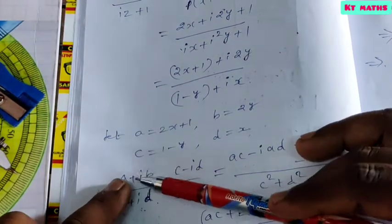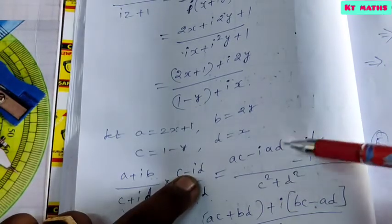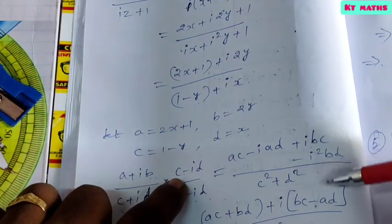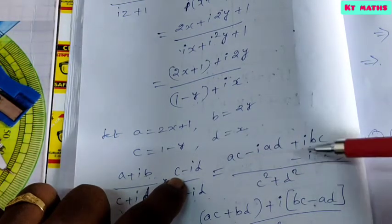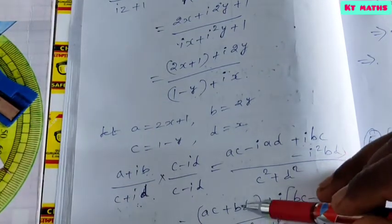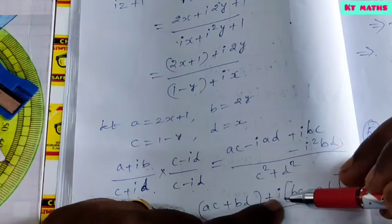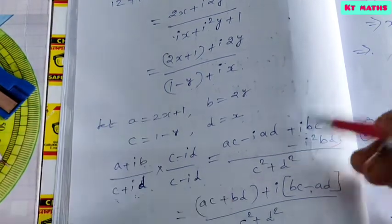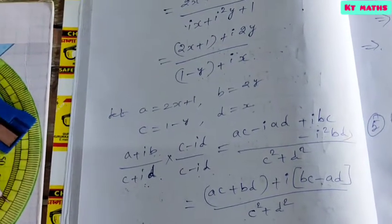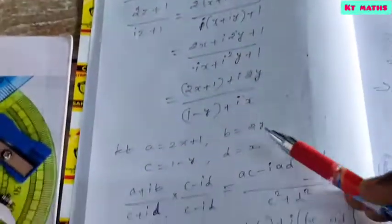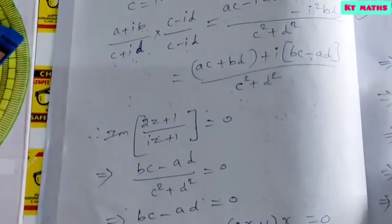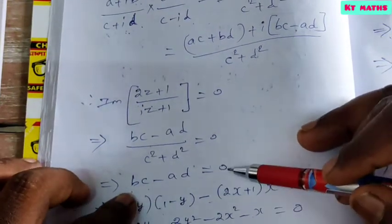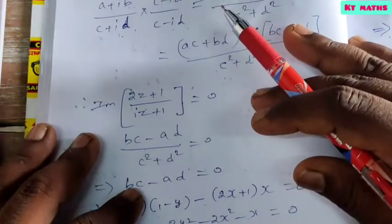The denominator becomes C squared plus D squared. Expanding the numerator: real part is AC plus BD and imaginary part is BC minus AD. So the imaginary part of the expression is (BC minus AD) divided by (C squared plus D squared). Setting this equal to zero gives BC minus AD equals 0.